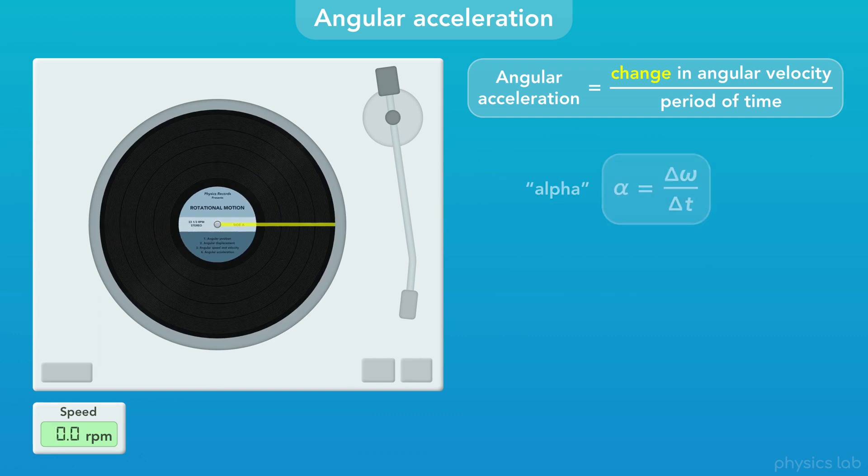We use the Greek letter alpha to represent angular acceleration. So alpha is equal to the change in velocity, delta omega, divided by the period of time, delta t.